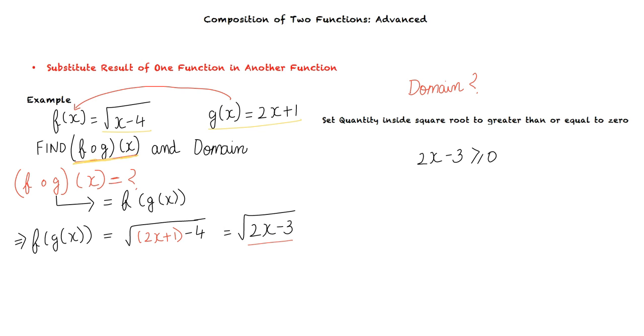2x minus 3 is greater than or equal to 0 implies x is greater than or equal to 3/2. Hence, x can take any value greater than or equal to 3/2. The domain of f of g is thus [3/2, infinity). We use brackets on the side of 3/2 because 3/2 is included in the domain. We use a parenthesis on the side of infinity as per convention.